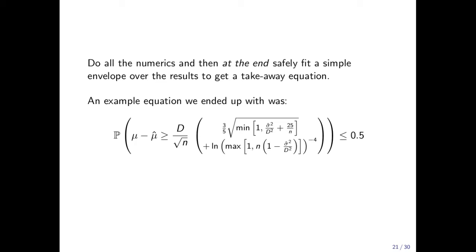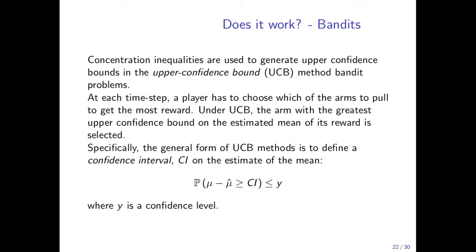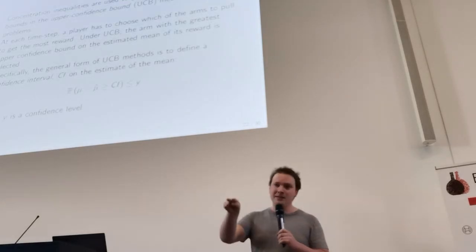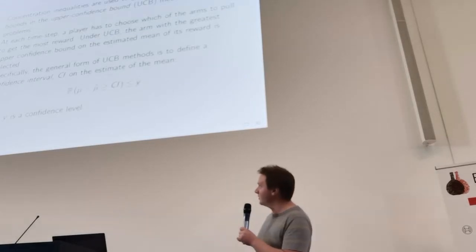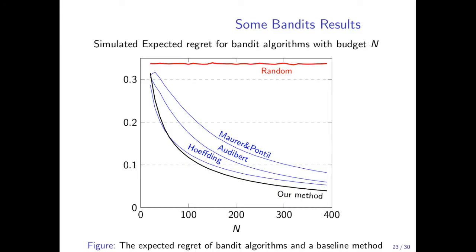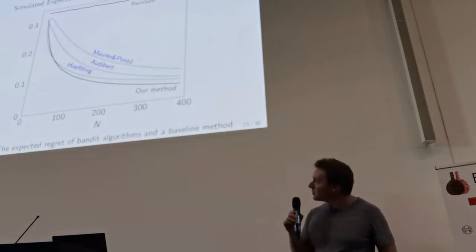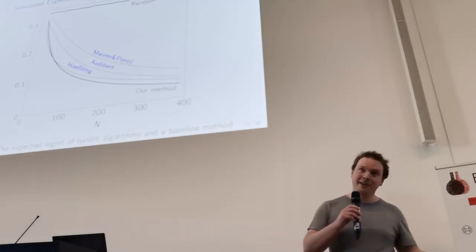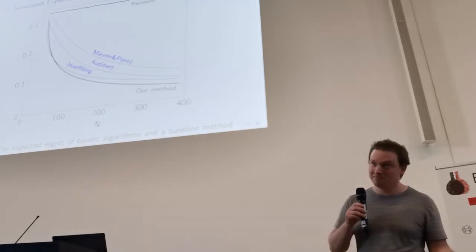Does it work? One example application, which we did in our paper, is to apply it to bandit algorithms. One of the more common bandit algorithms is the upper confidence bound method. The idea is that your bandit algorithm has to choose which arm to pull to get the most reward — it chooses the one with the highest mean plus confidence level, and concentration inequalities are used to characterize that upper confidence bound. The easiest way to show it works is to throw together a little simulation running on beta-distributed data for each of the arms. It seems to work pretty well. If you're using an algorithm like upper confidence bound and you develop a better actual confidence interval for the same data, you get better performance — surprise, surprise.